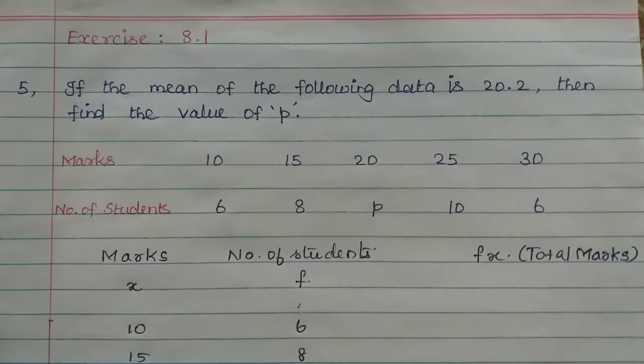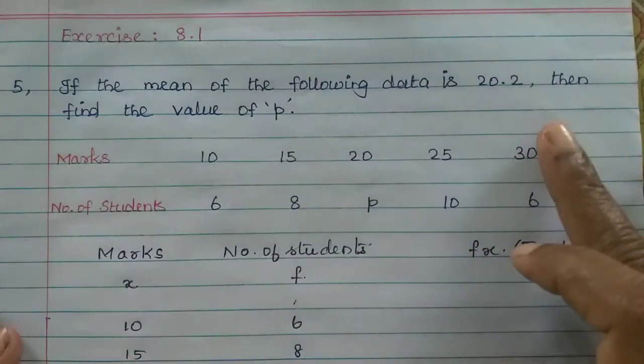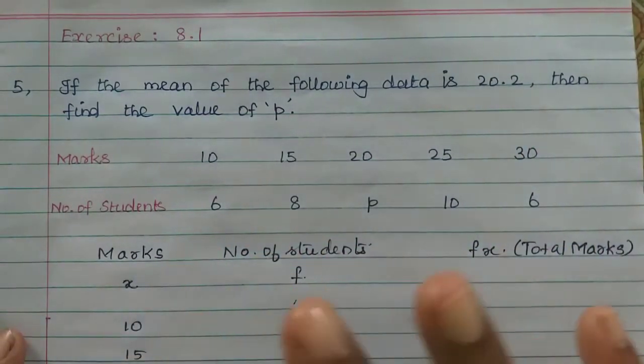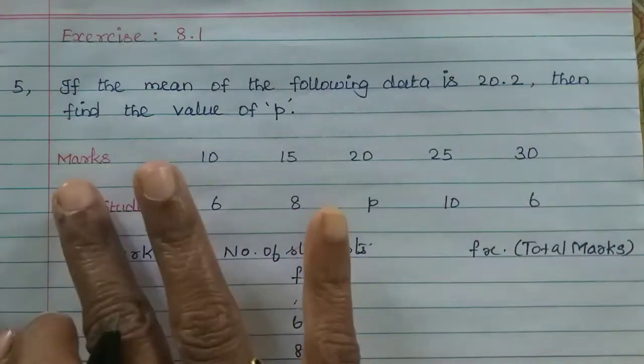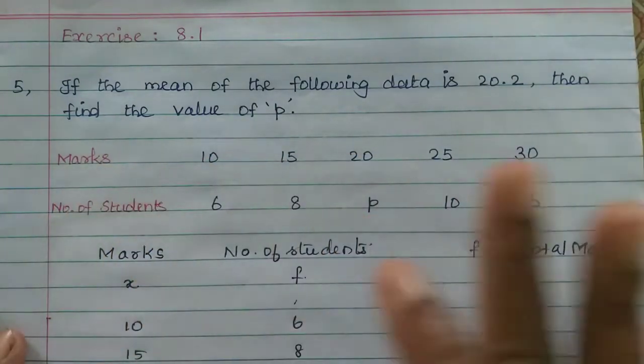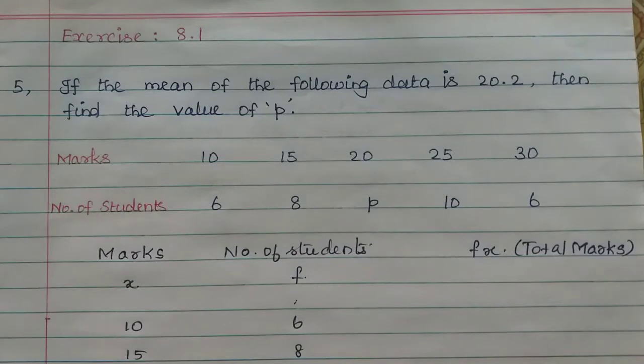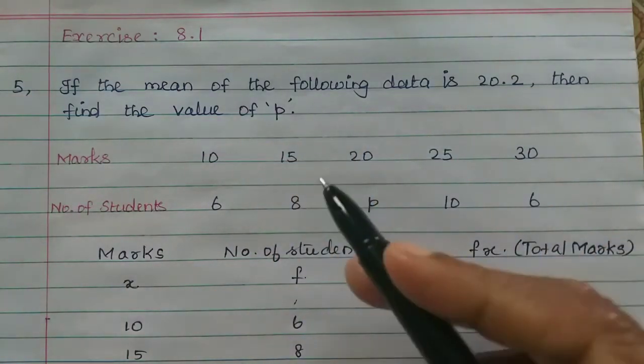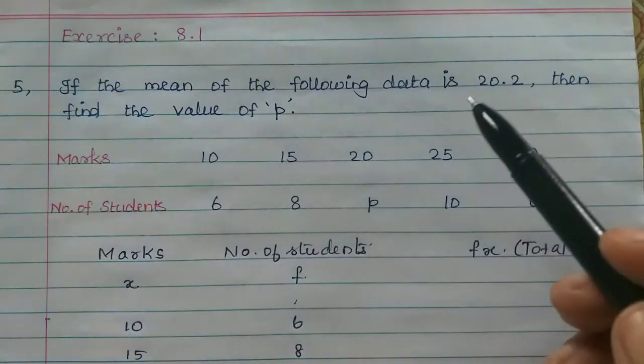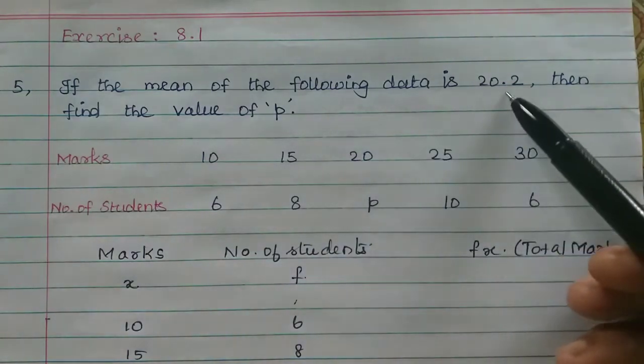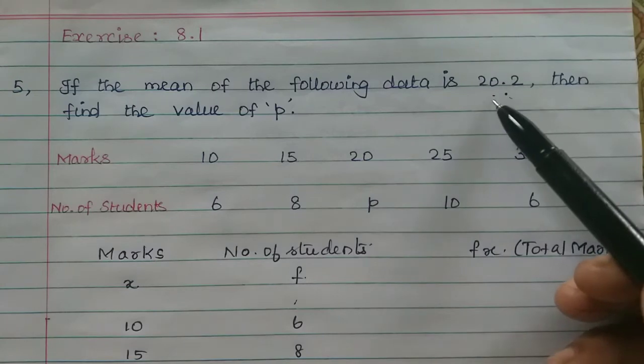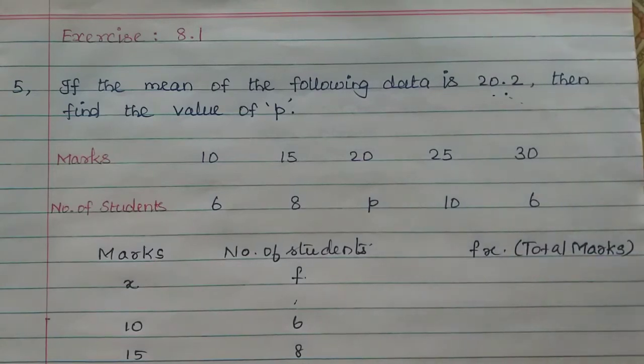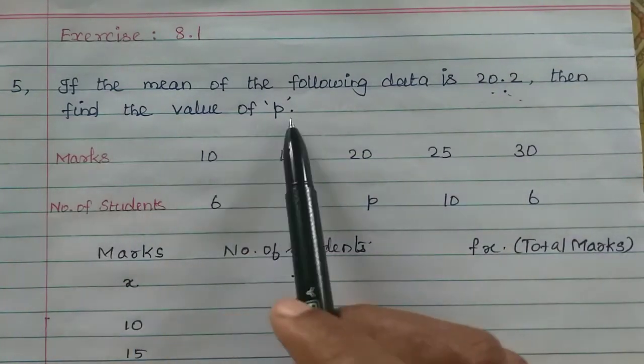Students, in this video, we have the 5th exercise of 8.1. If the mean of the following data is 20.2, then find the value of P. The problem gives marks of the students and number of students, so x bar is 20.2 and we need to find the value of P.